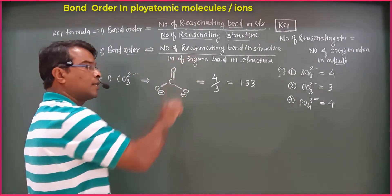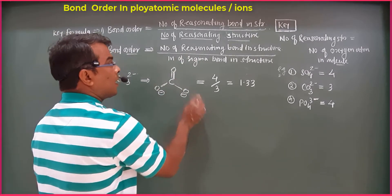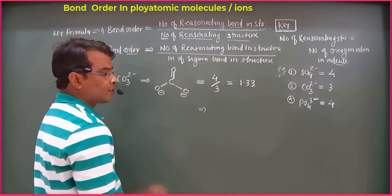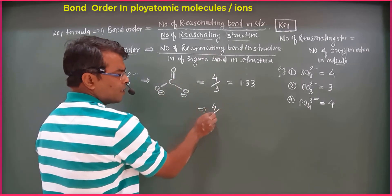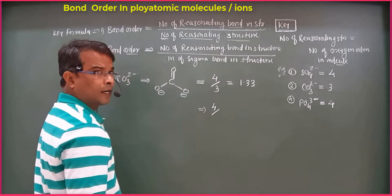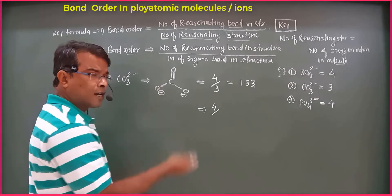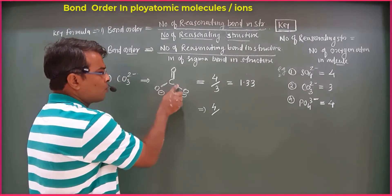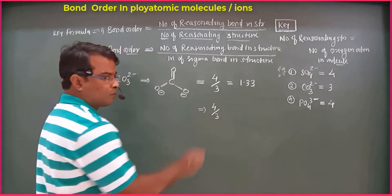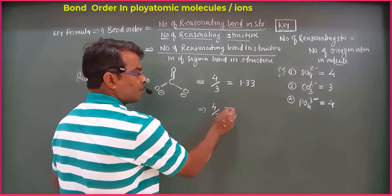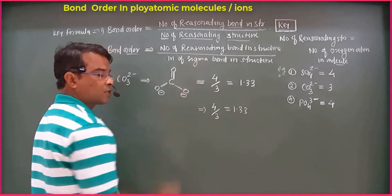Using the formula: the number of resonating bonds in the structure is 4, divided by the number of sigma bonds, which are single bonds — 1, 2, 3 — giving 3 sigma bonds. So the bond order is 4/3, which equals 1.33.